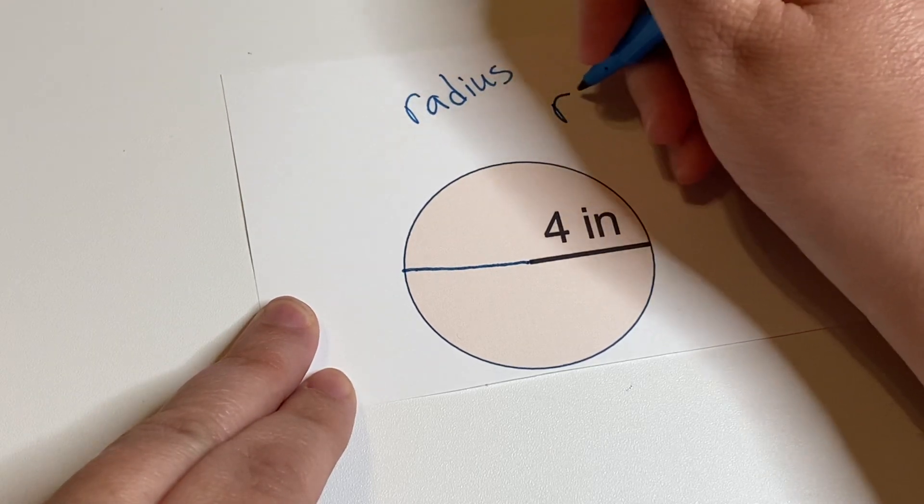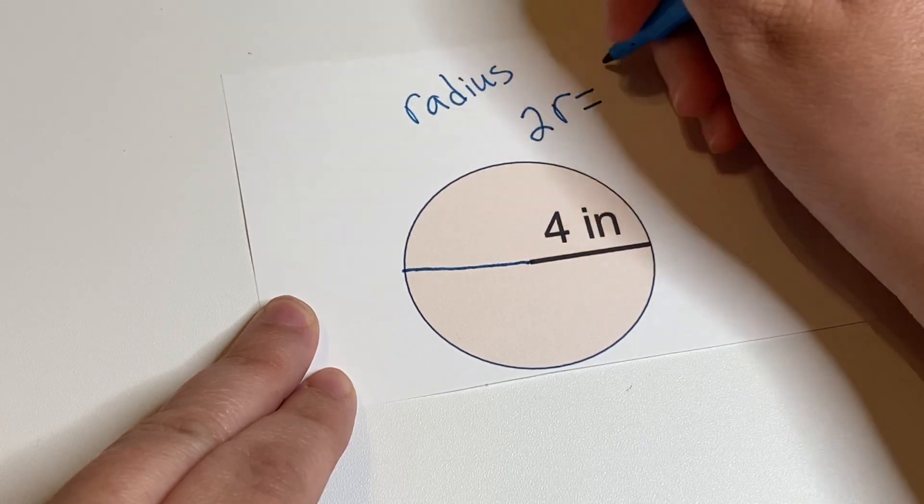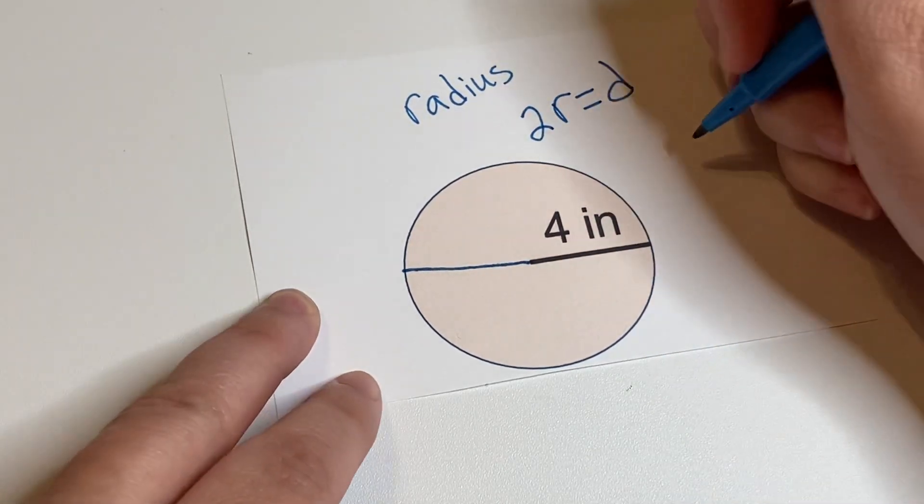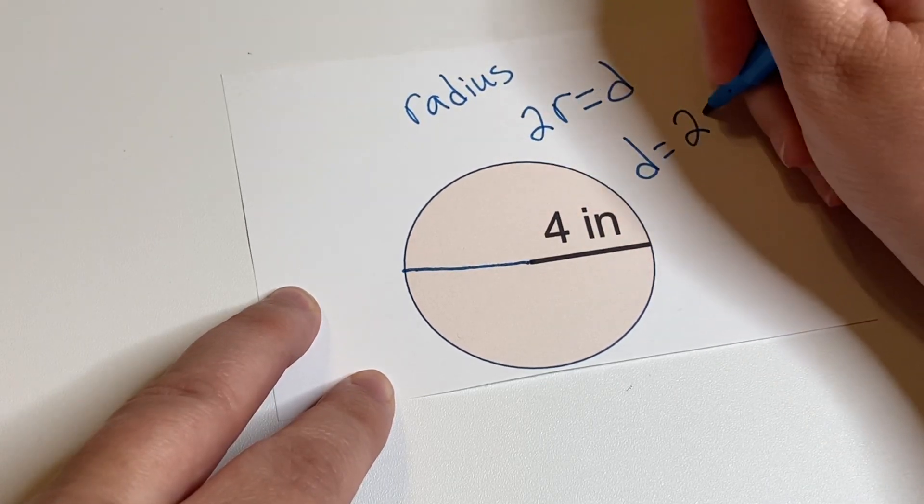So the radius two times is equal to the diameter. And you can have that either way around. Diameter equals two times the radius.